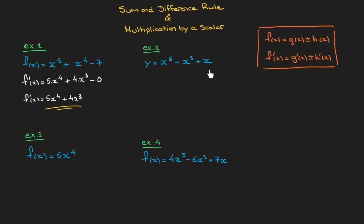Another example: we have y which equals x to the power of 6 minus x cubed plus x. Using the sum and difference rule we differentiate each of these three terms as though it were on its own. So dy/dx is equal to 6 times x to the power of 5, minus 3 times x to the power of 2, plus the derivative of x, which we've seen is equal to 1.